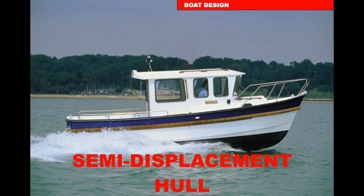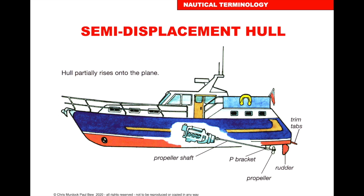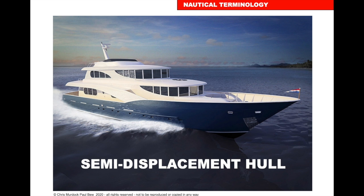The ultimate displacement craft is obviously a submarine - it disappears underwater completely in displacement mode. In semi-displacement mode, at speed you can see there's no wave at the front - it's overtaken the wave and is skimming across the water, which is called planing. Here's a cross-section showing how the vessel lifts up and skims on the water in non-displacement or planing mode. You can get quite large semi-displacement vessels.